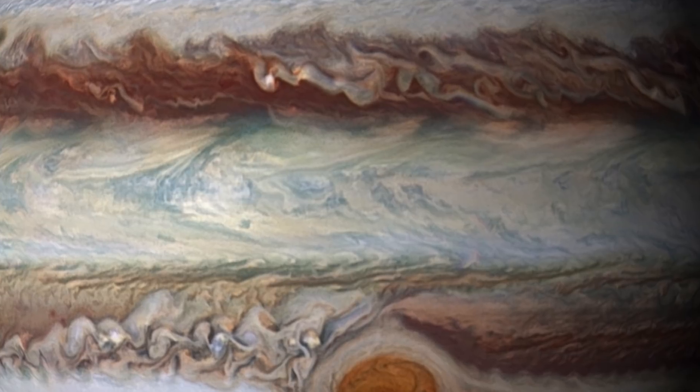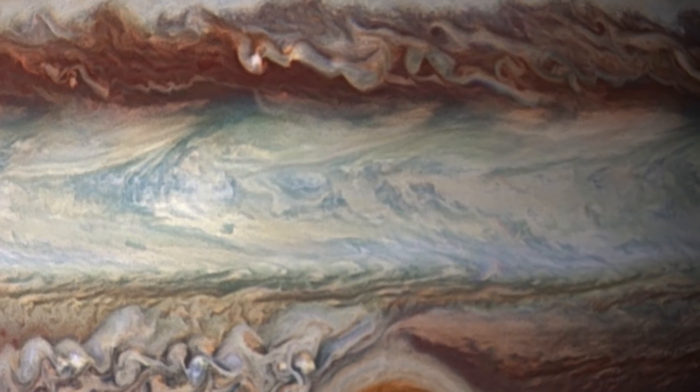Magnetic fields interacting with solar wind can cause vibrations that produce magnetic waves. The south pole auroras pulsate every 11 minutes because it takes 11 minutes for the wave to travel along one of Jupiter's magnetic field lines.